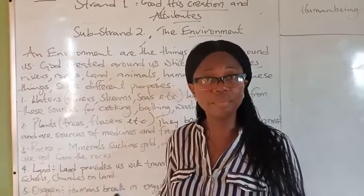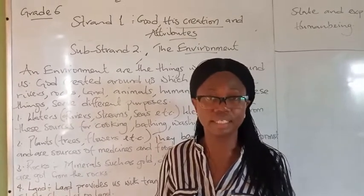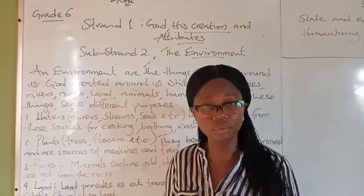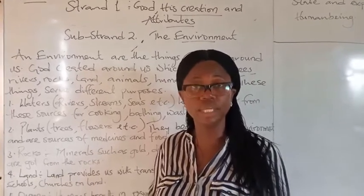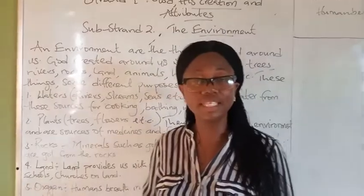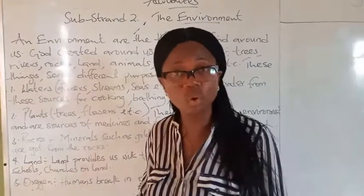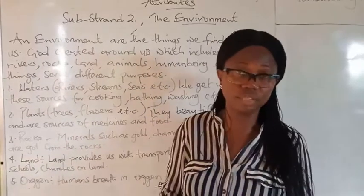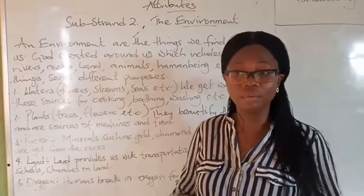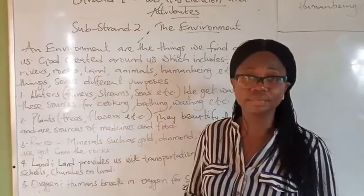God created human beings, He created animals, He created rocks, stones, sand, rivers. They are all part of the environment. And like you know the creation story, it took God 6 days to create the world and He rested on the 7th day. Those things He created in this earth are what we refer to as the environment. When you look around you, you see them all around you, and they all serve different purposes in our lives.